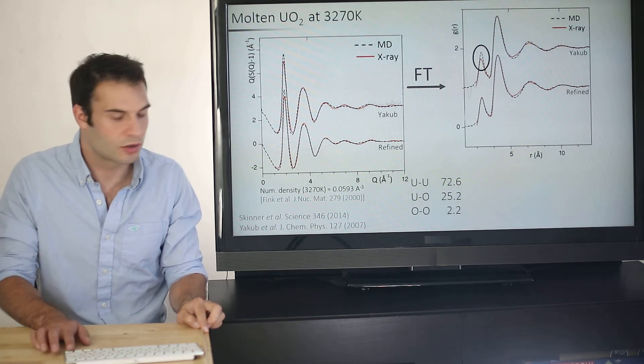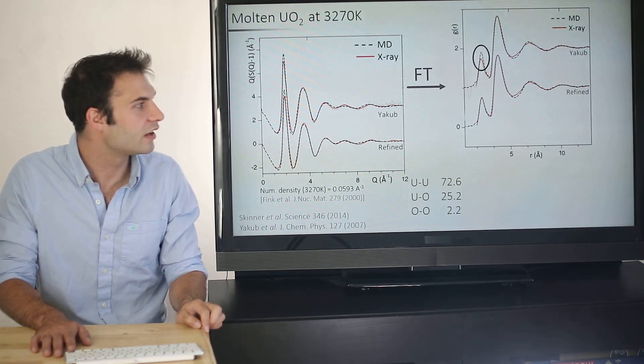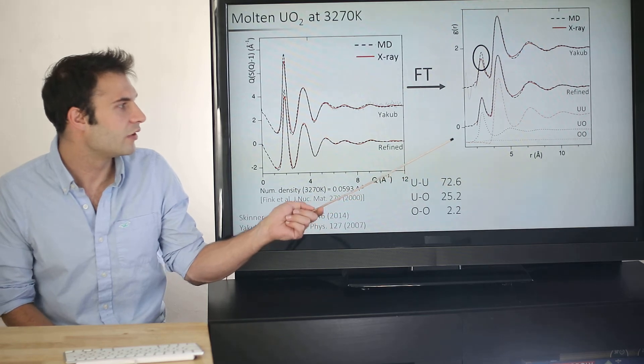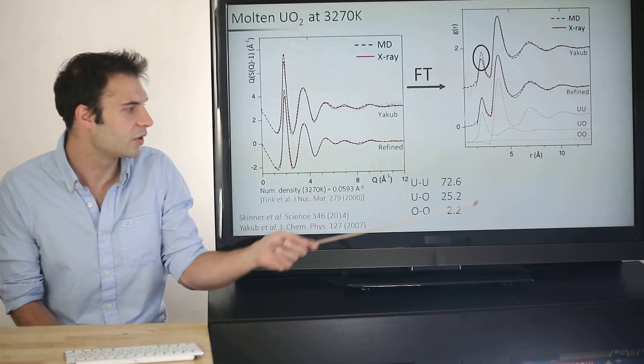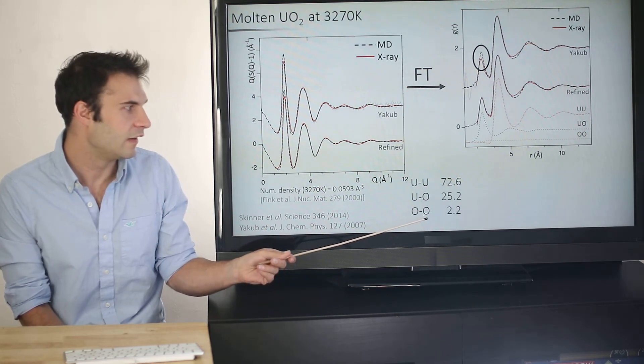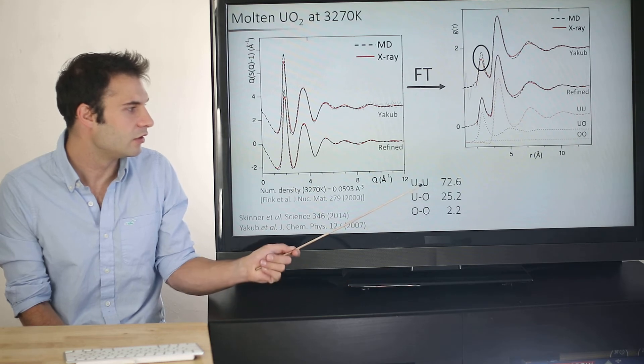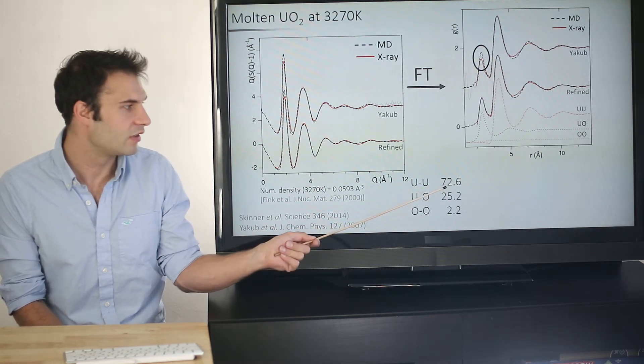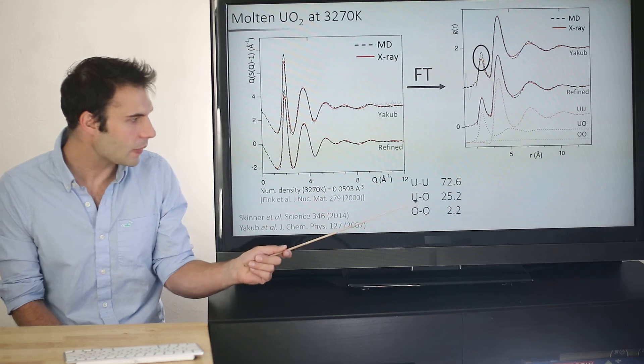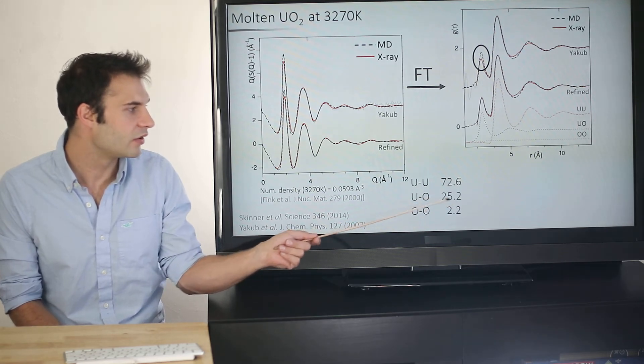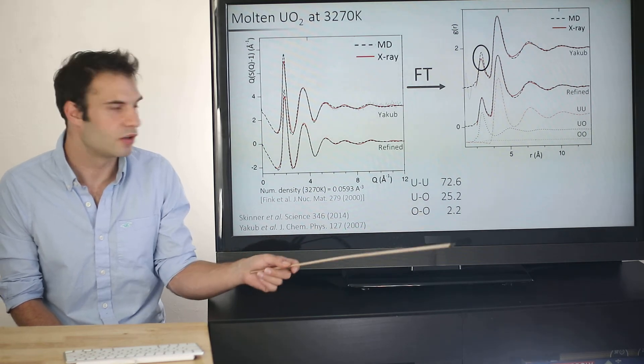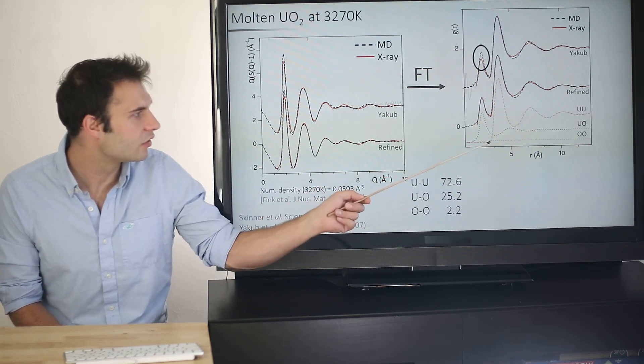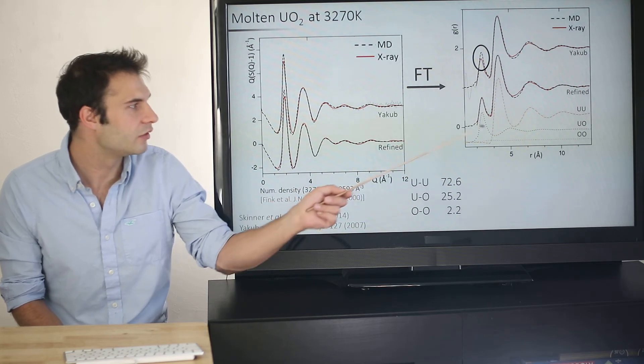What's really nice about the MD model is that you know exactly where all the atoms are in your model. You can break down the structure into its three components. Because we're using x-rays, the x-ray measurement doesn't really contain much information on the oxygen-oxygen. That's because oxygen only has eight electrons, and the x-ray weighting is related to the square of the number of electrons. Uranium has 92 electrons, so the uranium-uranium correlations are much more strongly weighted, about 72%. Uranium-oxygen correlations also have a strong weighting, but the oxygen-oxygen correlations are almost invisible in the x-ray pattern. We have this nice uranium-oxygen structure, which is fairly well separated from the uranium-uranium nearest neighbor correlations.